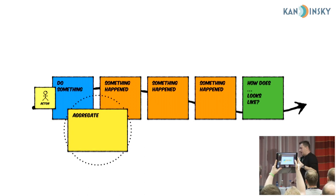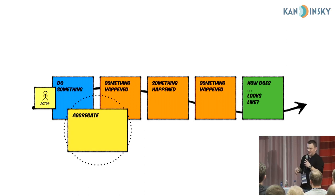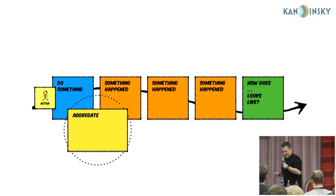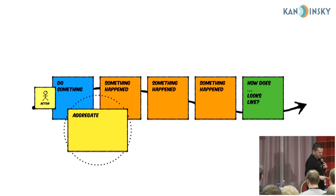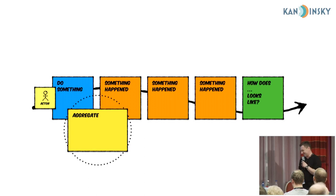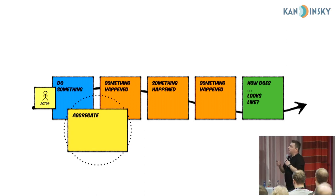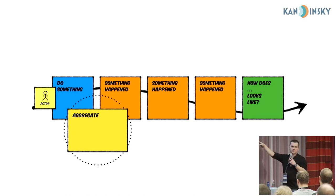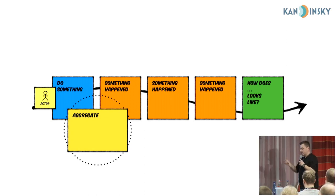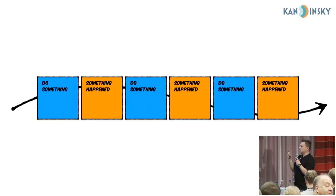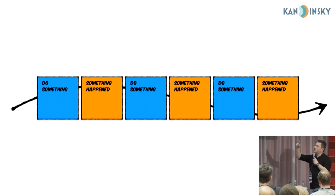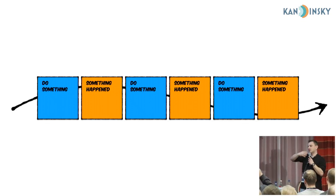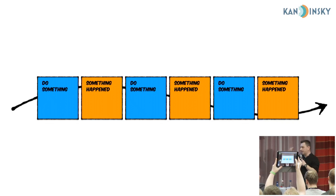We always ask questions: how big or how small is your aggregate? For the people from a business perspective, aggregates are not very important. What's much more important from their perspective is the flow. The flow is composed, in this scenario, from commands and events — command, event, command, event, event, command — a scenario. And usually this is not quite real, because this is just a single path.